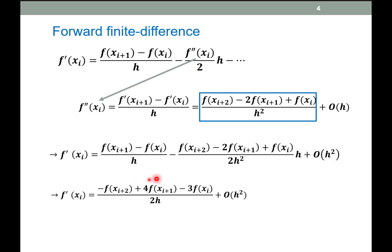Plus 4·f(x_{i+1}), which is 2 times the f(x_{i+1}) term, minus negative 2·f(x_{i+1}), giving us 4. Then for the f(x_i) term, negative 2·f(x_i) minus f(x_i) gives 3. So here the order of the error is O(h²), whereas before it was O(h).